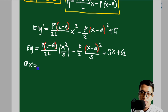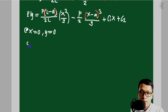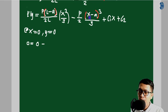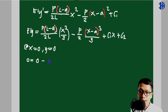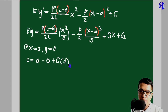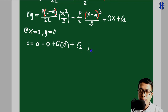Applying the first condition — at x equals 0, EIy equals 0: substituting x = 0, the (x minus a) term becomes negative a, which is less than zero, so it is set to zero. This gives 0 equals 0 plus C1 times 0 plus C2. Therefore, C2 equals 0.